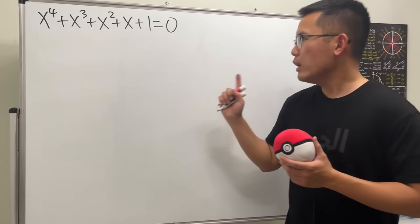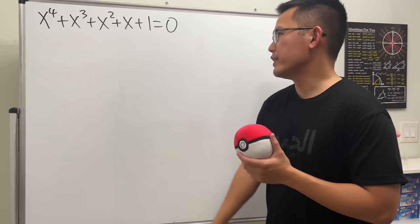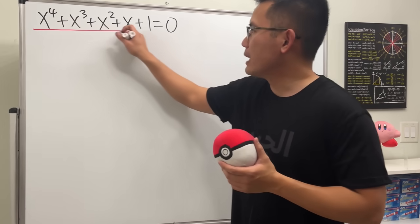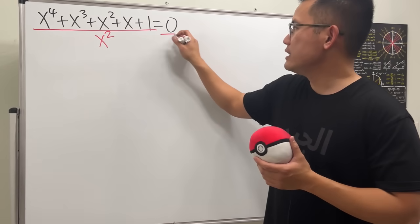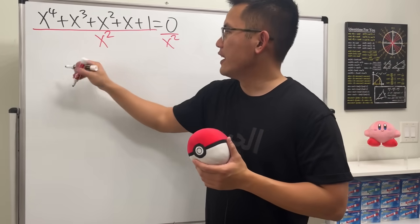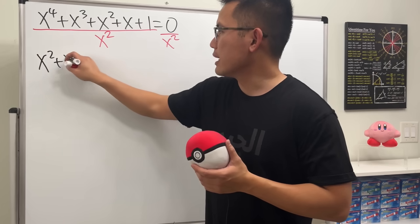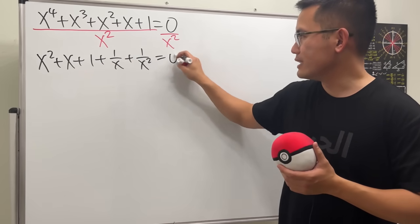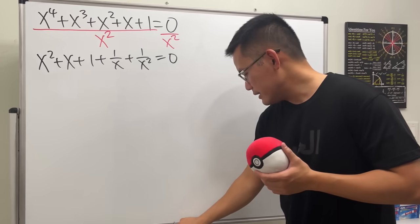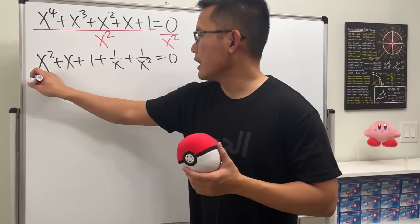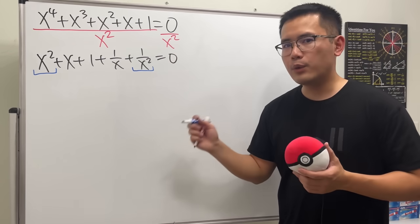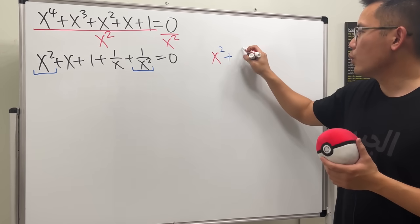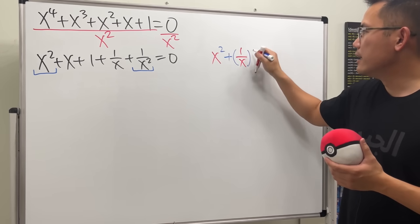Level four: now we have a quartic equation. Instead of the quartic formula, we divide everybody by x squared. Splitting and dividing individually, we get x squared plus x plus one plus one over x plus one over x squared equals zero. Now focus on x squared plus one over x squared, because we can complete the square for those terms.